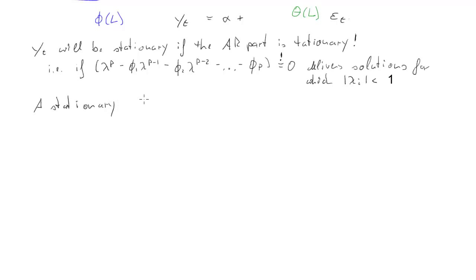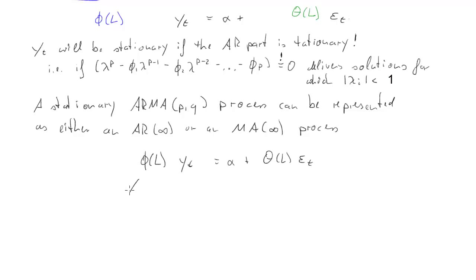It turns out that the stationary ARMA(p,q) process can be represented as either an AR infinity or an MA infinity process. So to see how that works, let's state our ARMA(p,q) process.